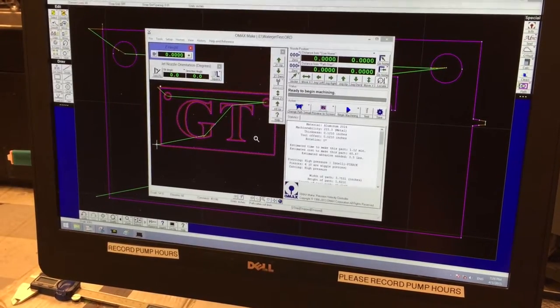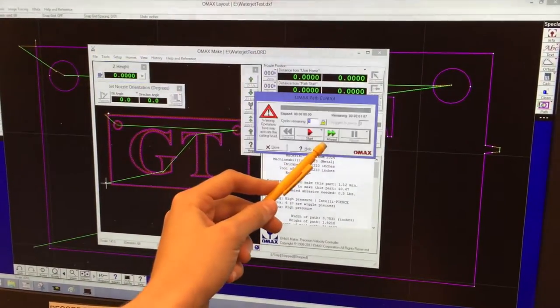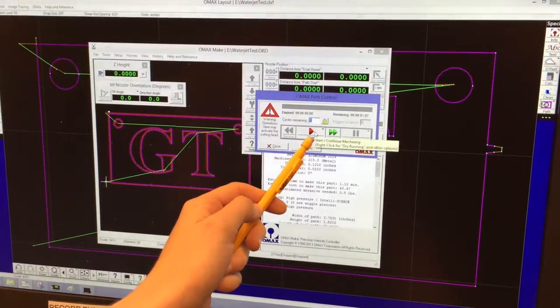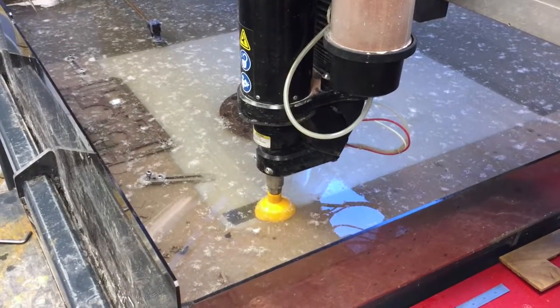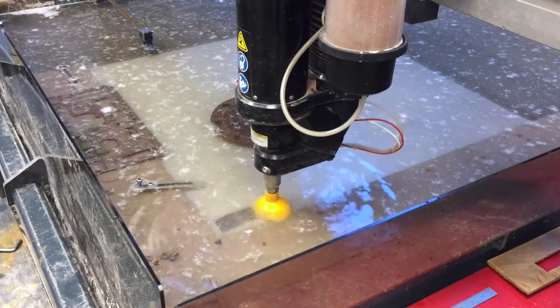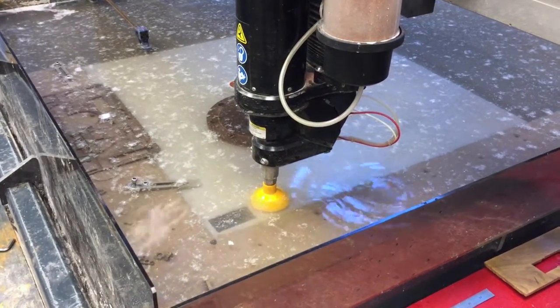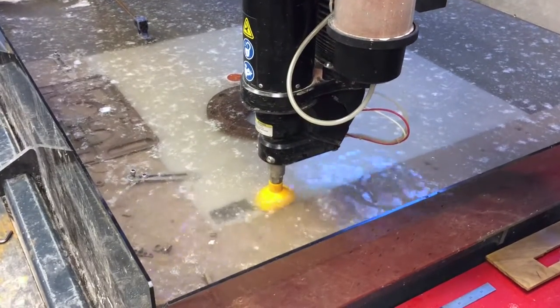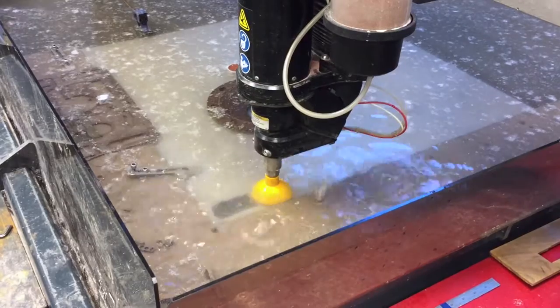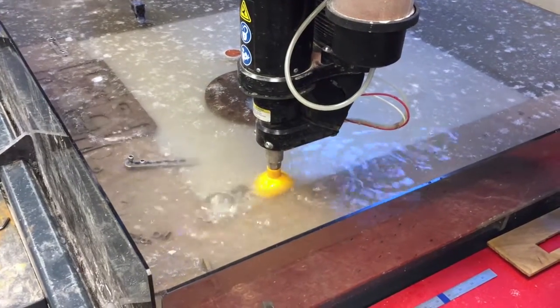So once all of your counters are zeroed, click Begin Machining, and then click Start. Now the water jet begins cutting. Keep your hand near the pause button in case anything goes wrong.